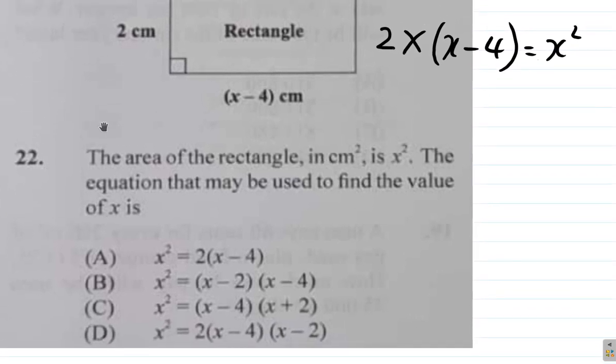Let's see what happens here. They put x squared first, so let me put x squared first. x squared equals, and then 2, open bracket, x minus 4.